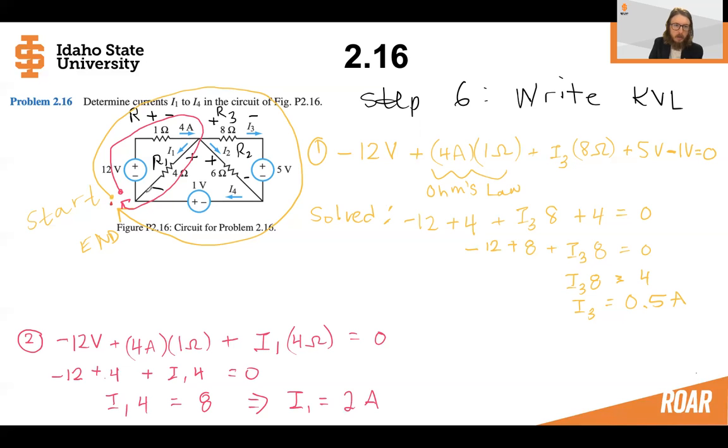So in the first loop, if we start right here, we go minus 12 across this battery or this voltage source, then from high to low. So here we went from minus to positive. Here we're going from positive to negative. So we're going to switch signs right here. So we did minus 12 plus four amps times one ohm. And this is how we're writing Ohm's law as we go. Then we come across the unknown here, current I3 through resistor of eight ohms. And then we go from positive to negative on this five volt battery and then from negative to positive on the one volt battery. So when we go down this battery from positive to negative, we added it. And when we went through this battery from negative to positive, we're going to subtract it here on our KVL. So we can see that this equation here is one equation and one unknown. So we're going to solve it for current I3.